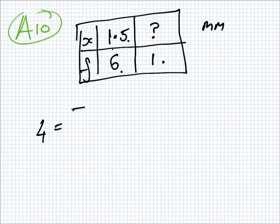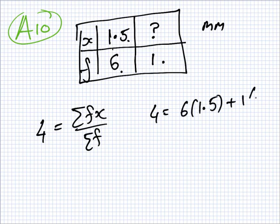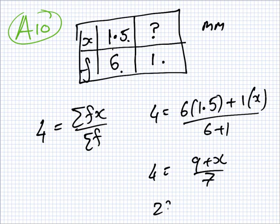So four should equal sum fx over sum f. So four should equal six times 1.5 plus one times x over six plus one. So four should equal nine plus x over seven. So twenty-eight should equal nine plus x. So x is nineteen.